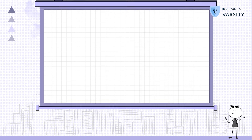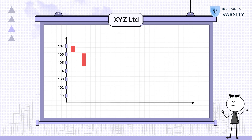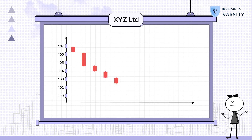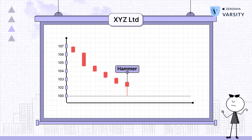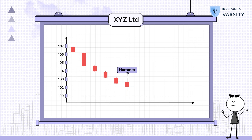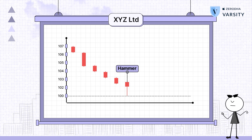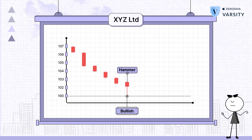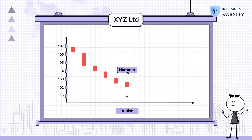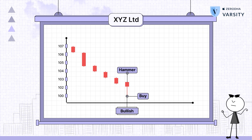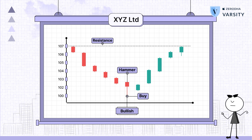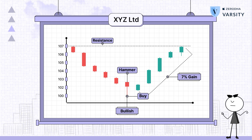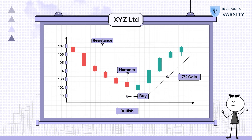Let's look at an example. Let's say you want to invest in a stock that has been declining for many periods and it forms a hammer pattern. We know that the hammer pattern signals a bullish move in a falling market. So when you invest at 100 points, your target is the immediate resistance — that is, 107. So in this case, you will have a 7% upmove benefit.